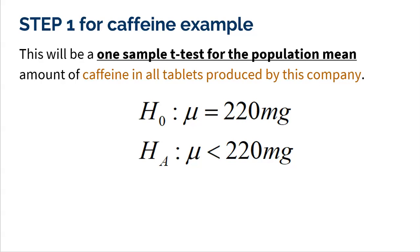Alright, so by now I hope everybody knows step one is naming the procedure and giving that null and alternative hypothesis. So this is a one sample t-test for the population mean amount of caffeine in all tablets produced by this company for this particular batch.